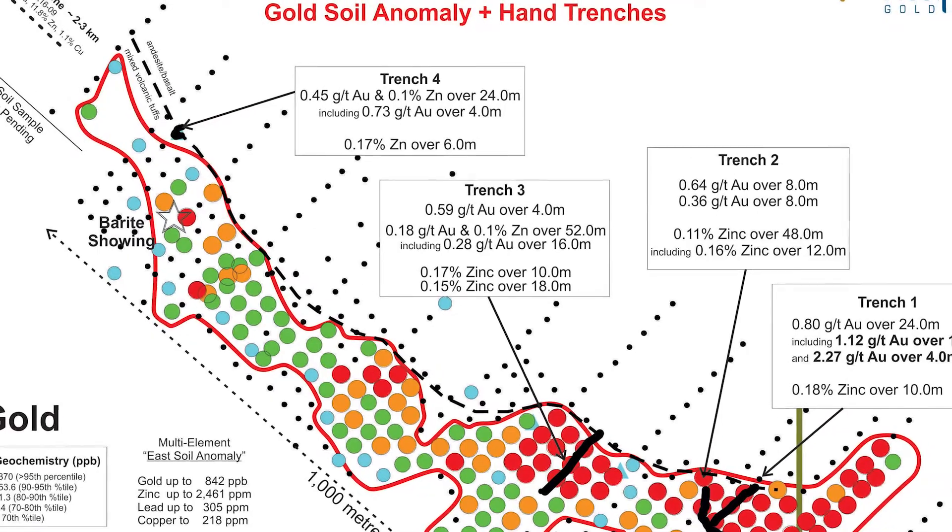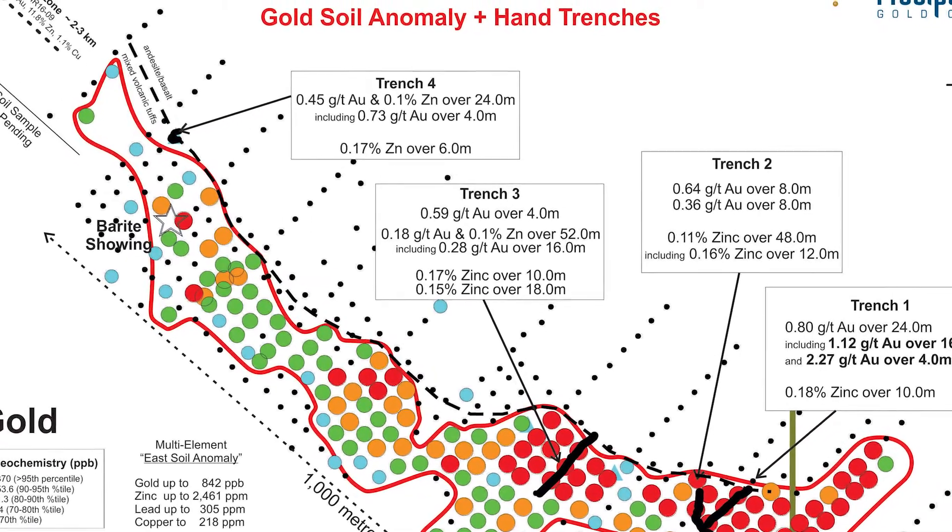Identifying barite within this anomaly is a critical component to our exploration program in recent months, as barite is commonly associated with known mineralization throughout this district and provides a critical guide for prospecting, exploration, and drilling within this zone.